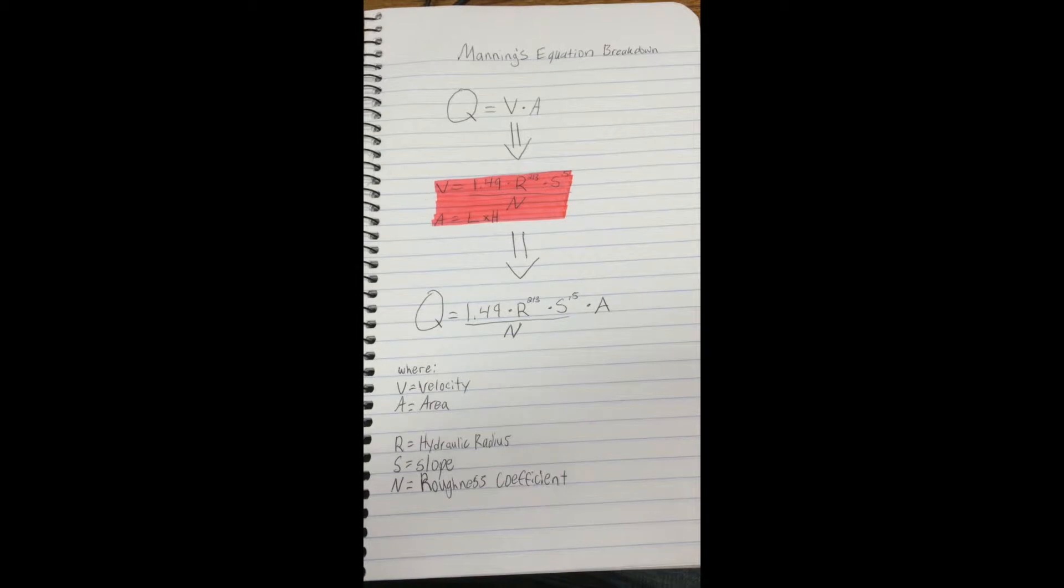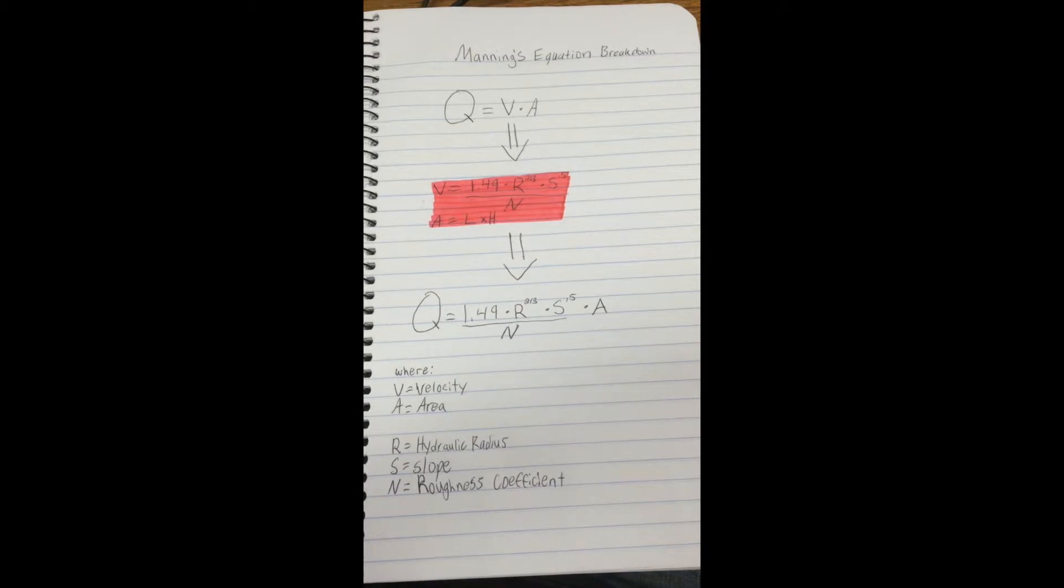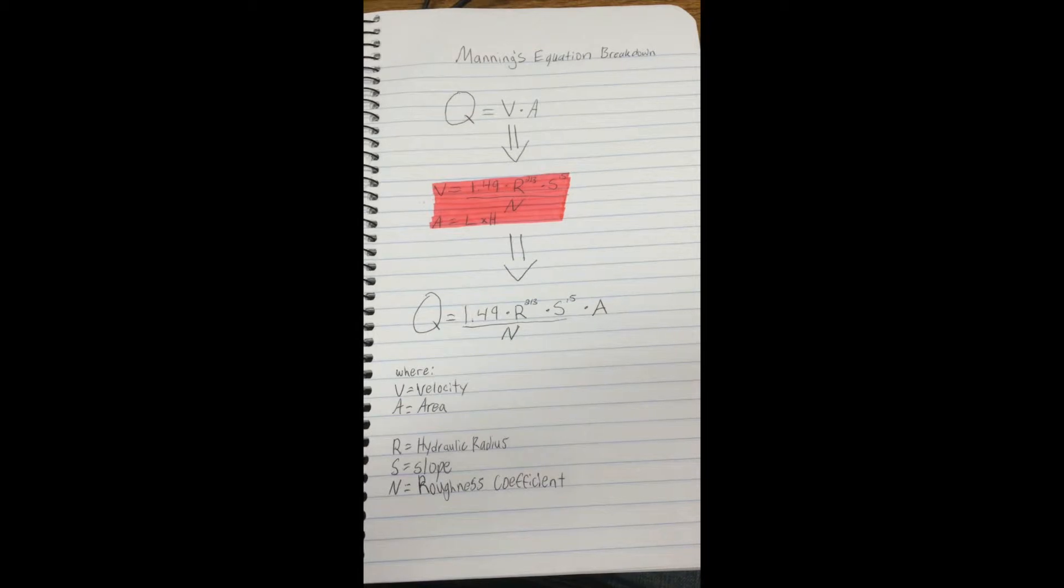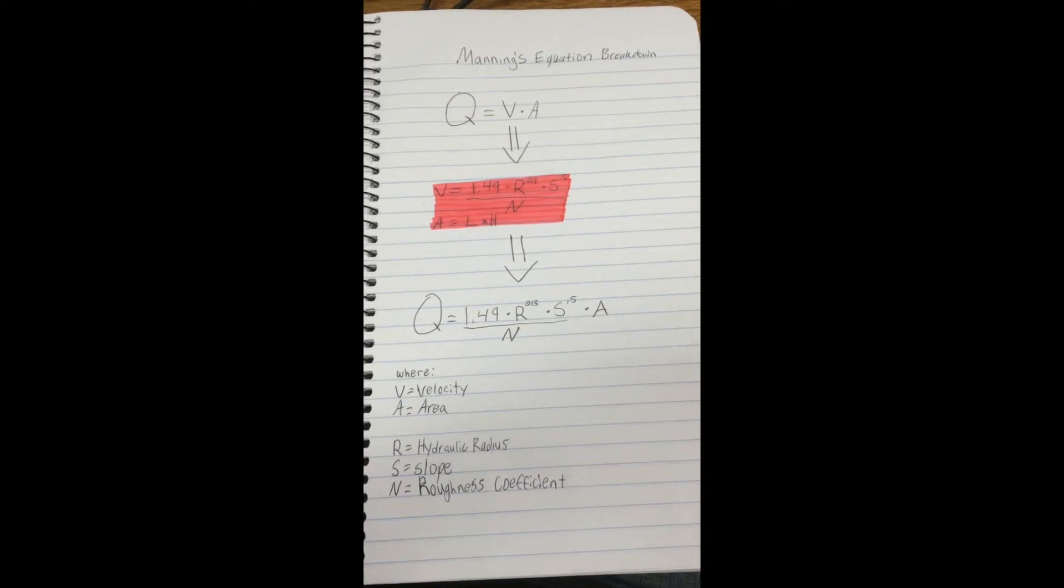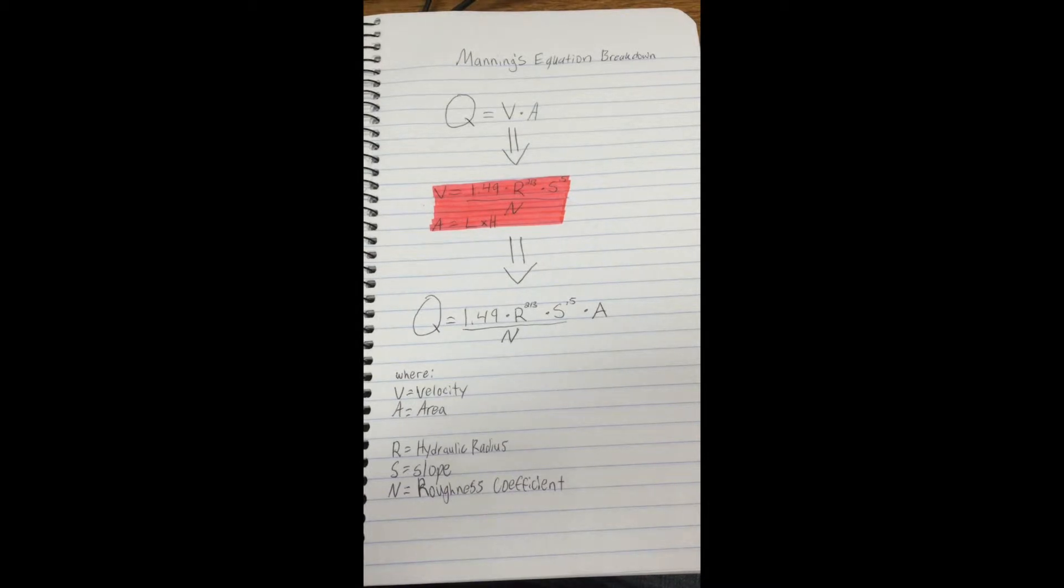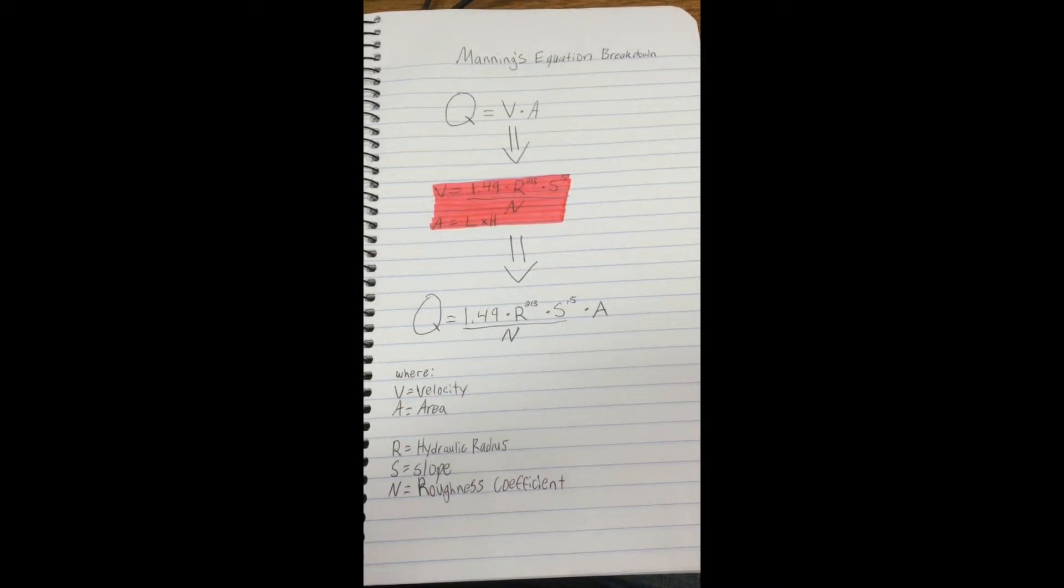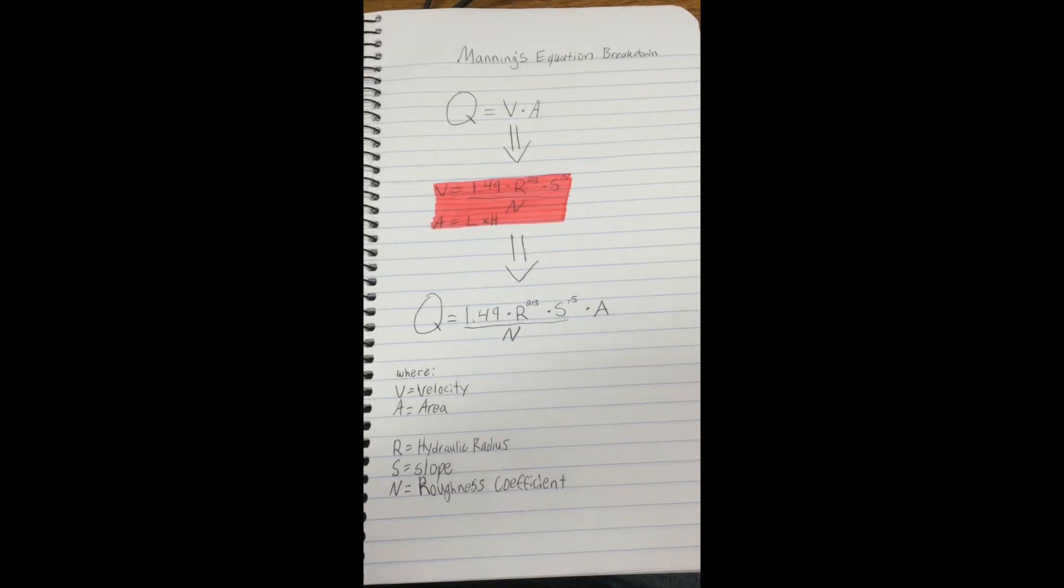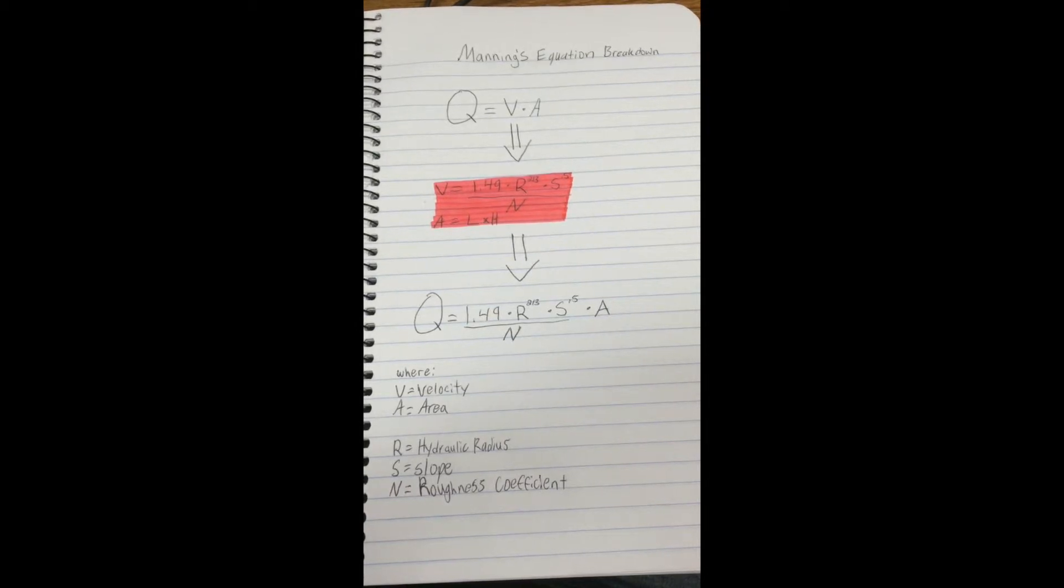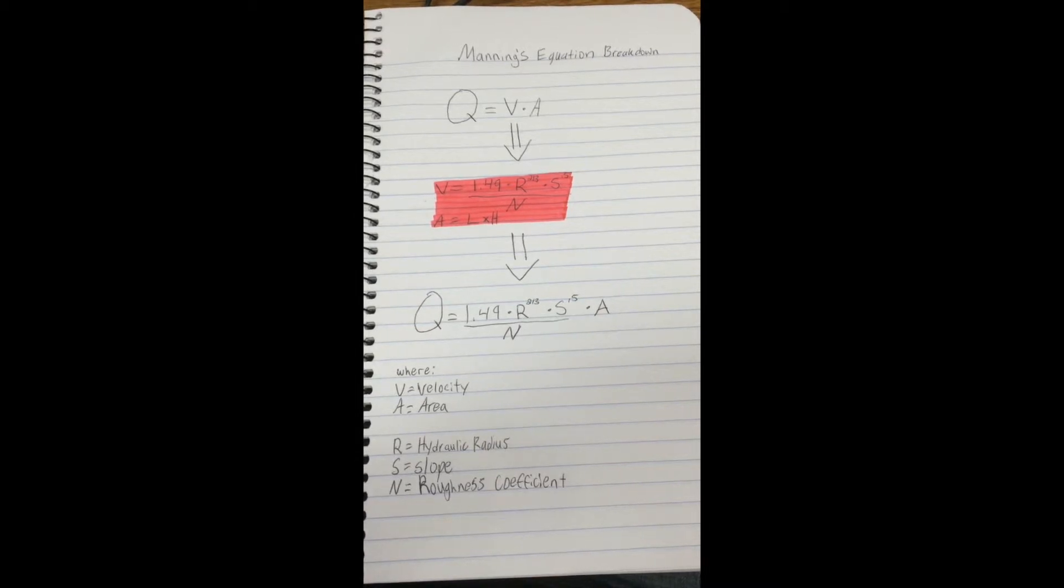Manning's equation isn't as simple as it initially seems because it does break down into more parts. Our velocity V is actually made up of three parts: hydraulic radius, slope, and our n-roughness coefficient. This gives us a velocity that is equal to 1.49 times the hydraulic radius R to the 2/3 times our slope to the 0.5 divided by our n-roughness coefficient. Our area also breaks down to length times height.